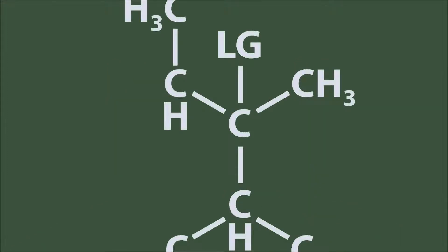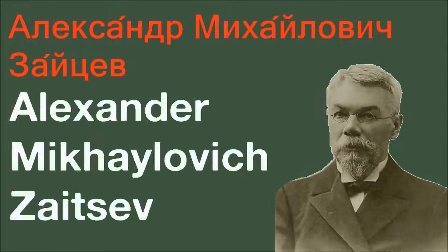In most complex substrates, there are multiple possible beta positions, with multiple options. Which beta position would be chosen? The scientist responsible for the answer is Russian chemist Aleksandr Mikhailovich Zaitsev.